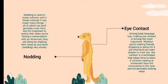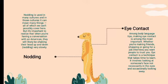Fifth, nodding. Nodding is used in many cultures and can mean different things. When having a conversation with an American, they will likely be nodding their head up and down very slowly. This does not necessarily mean 'yes, I agree' or 'I like what you're saying' — it simply shows that they are listening to you. Learn to nod slowly as you speak with people to demonstrate that you are listening.